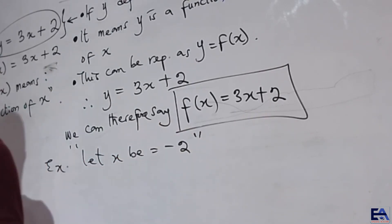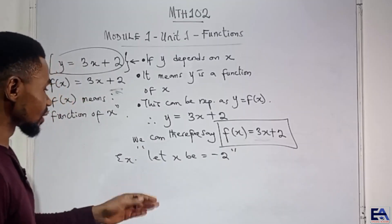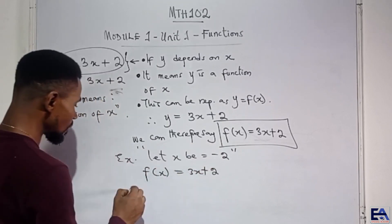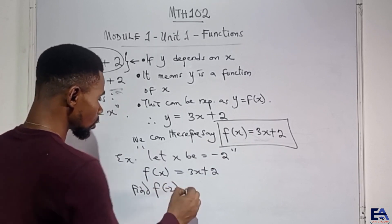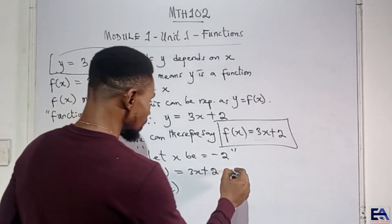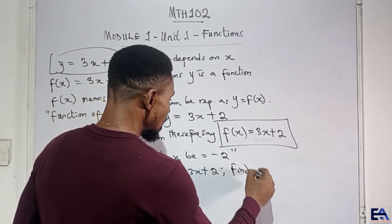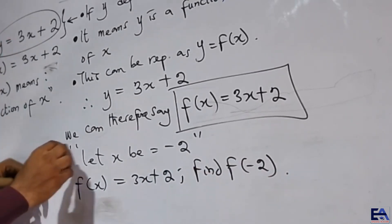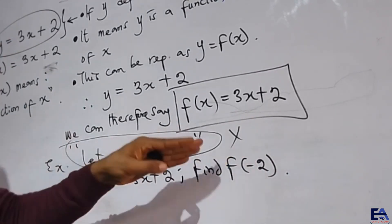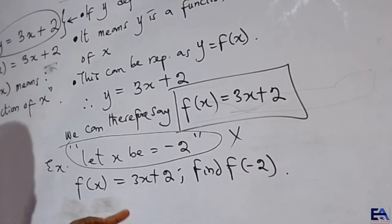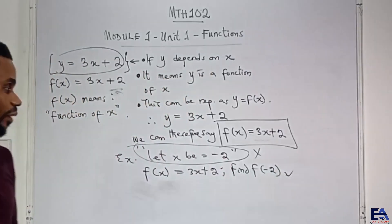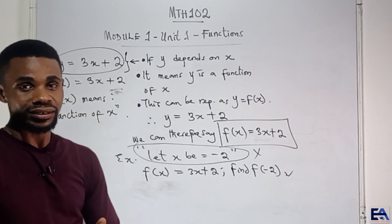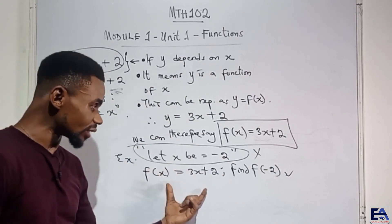We would rather say that if f of x is equal to 3x plus 2, we would rather say find f of minus 2. That's what the question would say. It's better represented that way instead of writing it in words. So we no longer deal with it this way anymore. But rather, we just deal with it in this way. Although both of them mean the same thing, this is more technical, more standard. It is more mathematically standard to write it this way.